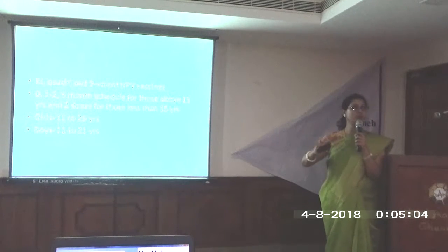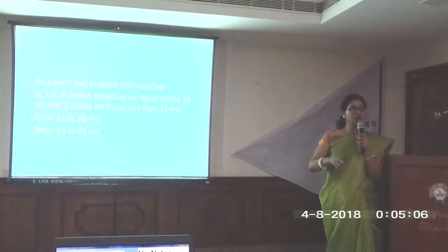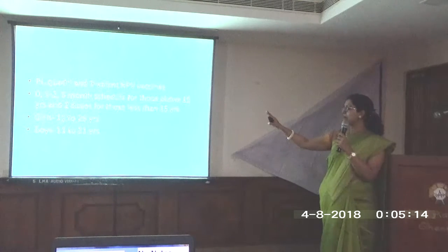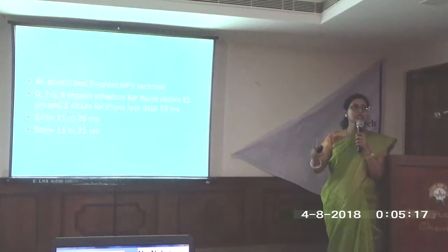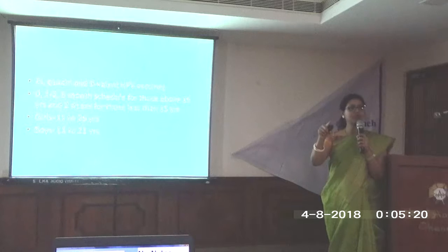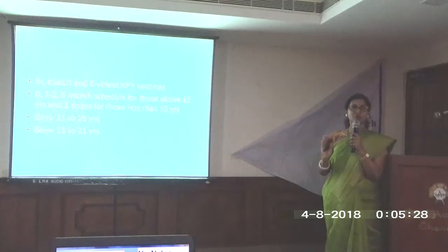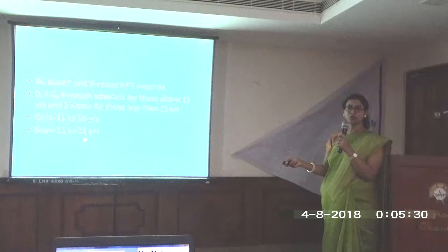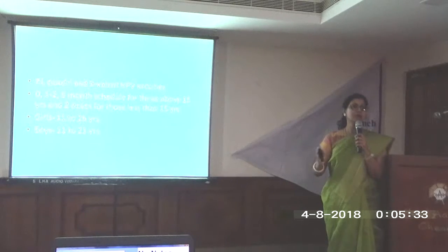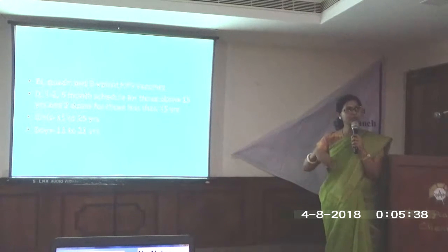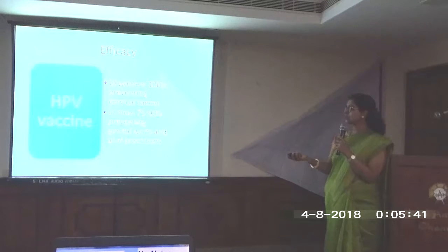The HPV vaccine is given over three doses: at 0, one to two months, and then the third dose at six months. If the child is less than 15 years of age, only two doses are needed: zero and then a second dose between one and two months. For girls, the advised age is 11 to 26 years; for boys, usually 11 to 16 or 11 to 18 years. If men-who-have-sex-with-men behavior is present, the vaccine can be extended till 26 years even for boys.